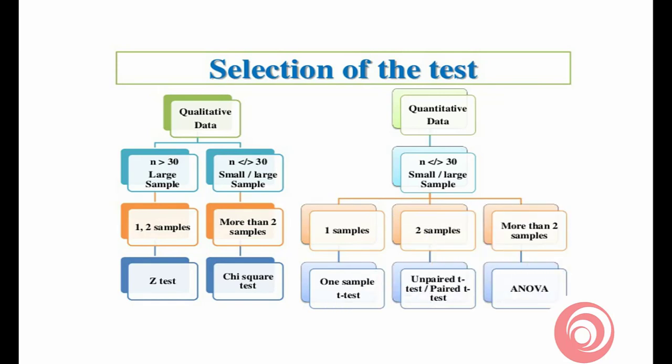An important step is the selection of the right statistical test for the analysis of your research. If we have qualitative data and the sample size is less than 30, or we need to compare one to two groups, then we employ the z-test. If the sample size is greater than or equal to 30 and the groups to be compared are more than two, then we use the chi-square test. The chi-square test is also employed on categorical numerical data. On the other side, for quantitative data: if the sample size is less than 30 and we have one group, we use the one-sample t-test; if we have two groups, we use the unpaired t-test.